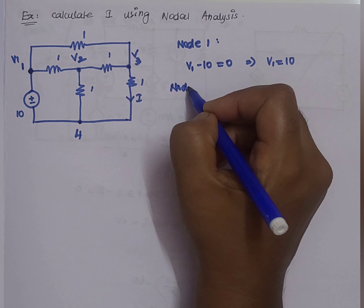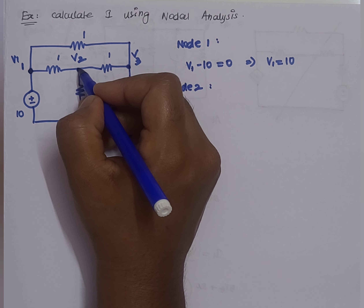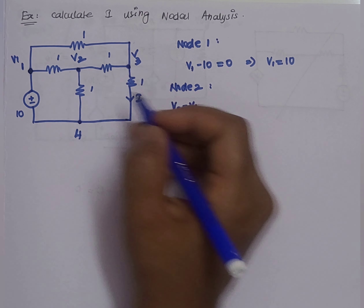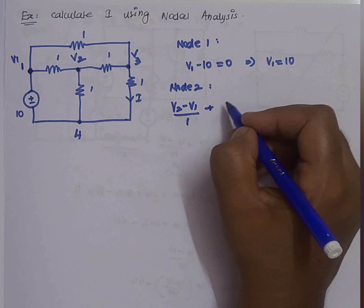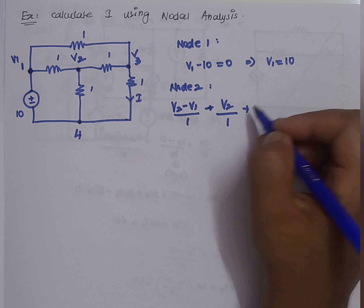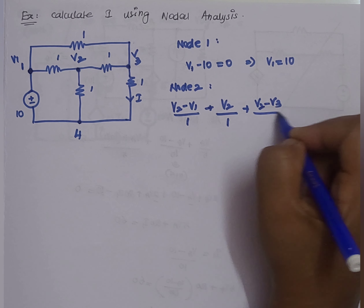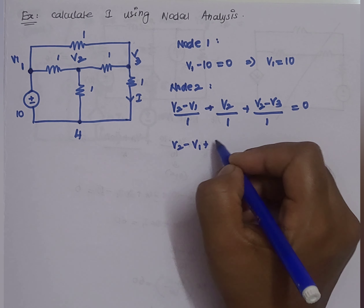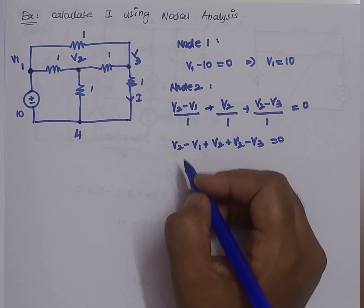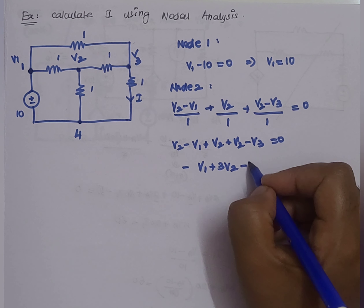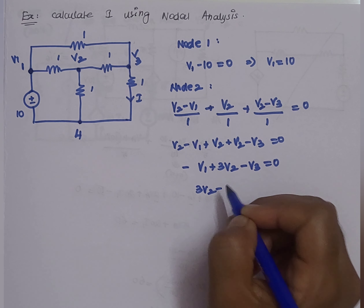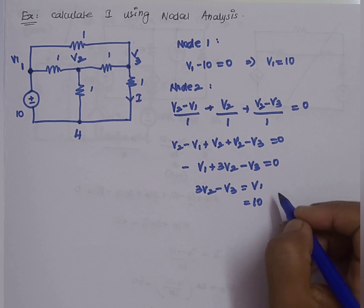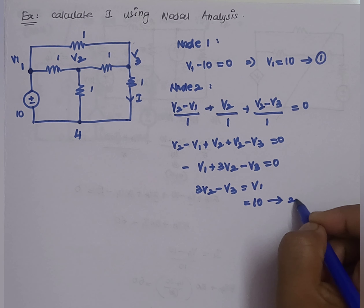At node 2, the KCL equation is: (V2 − V1)/1 + V2/1 + (V2 − V3)/1 = 0. Simplifying: −V1 + 3V2 − V3 = 0, so 3V2 − V3 = V1 = 10. This is our second equation.